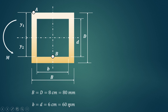Because of this anticlockwise moment, point B is being compressed and point A is being elongated. Therefore, compressive stress will be induced at point B and tensile stress will be induced at point A.